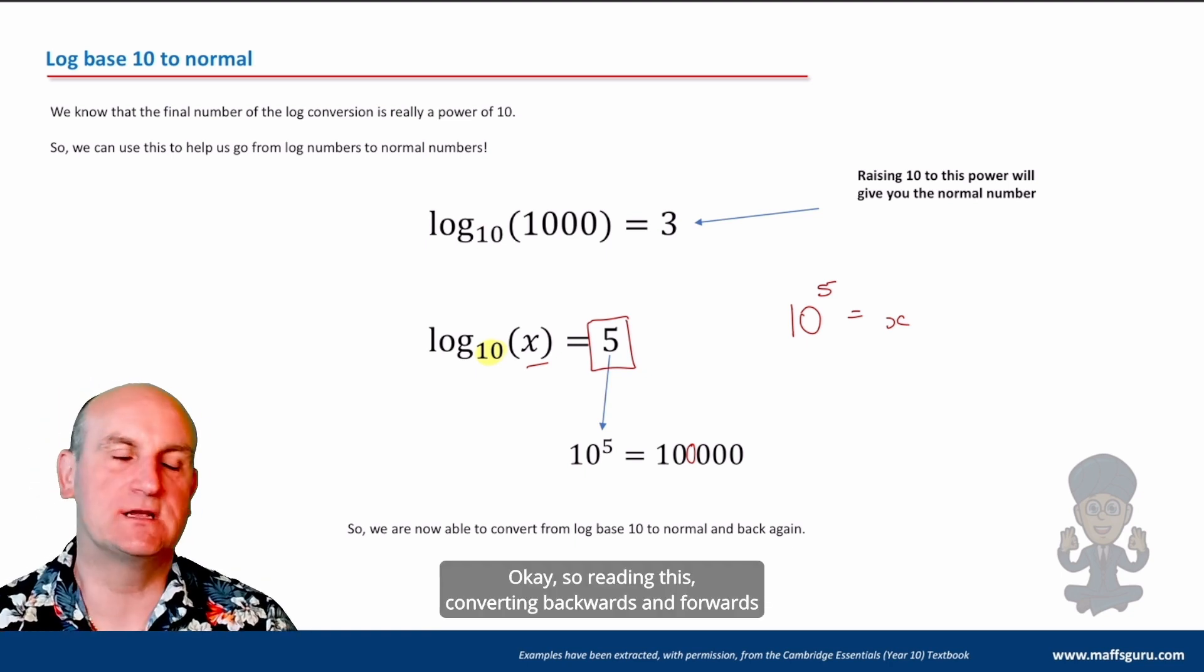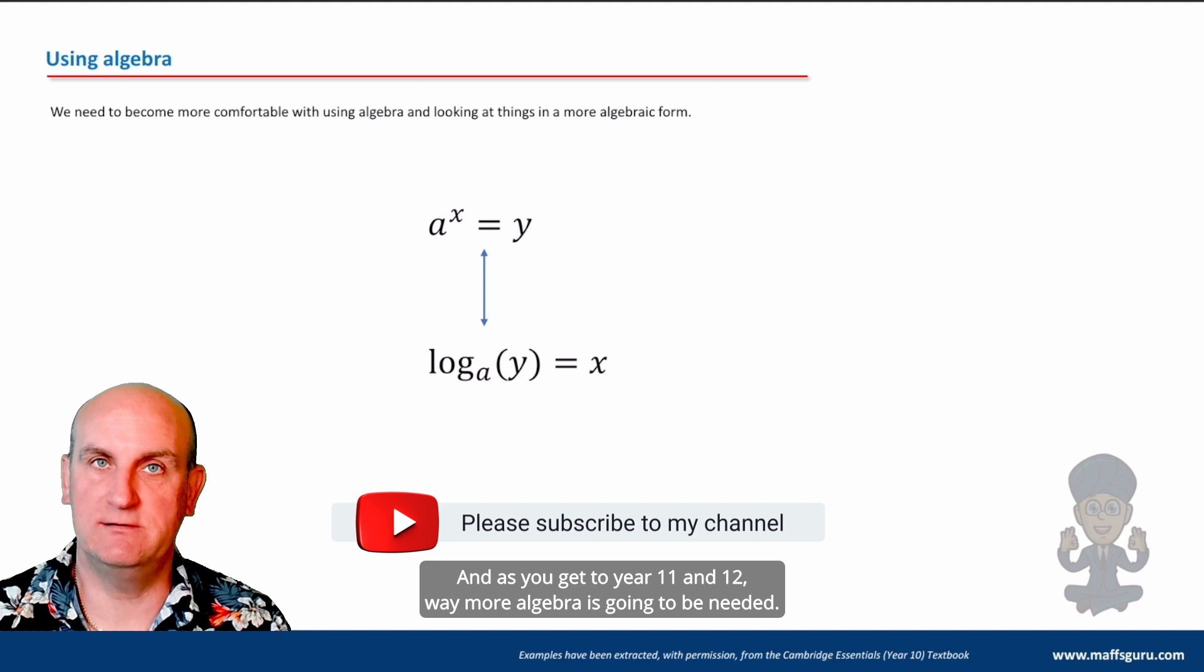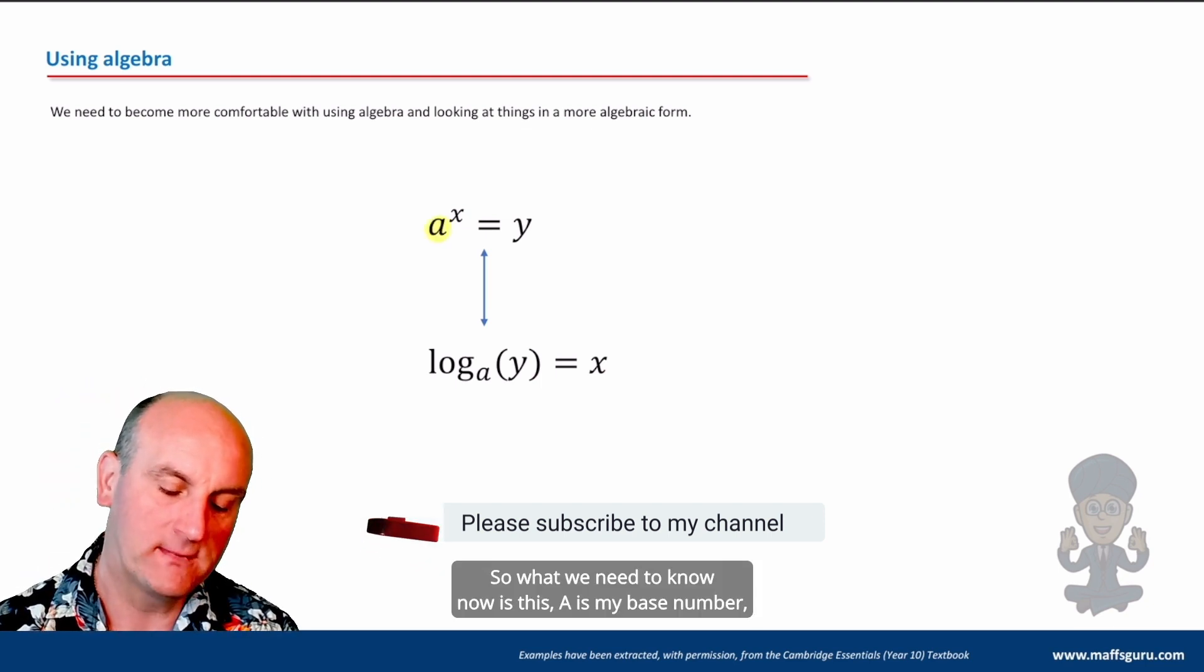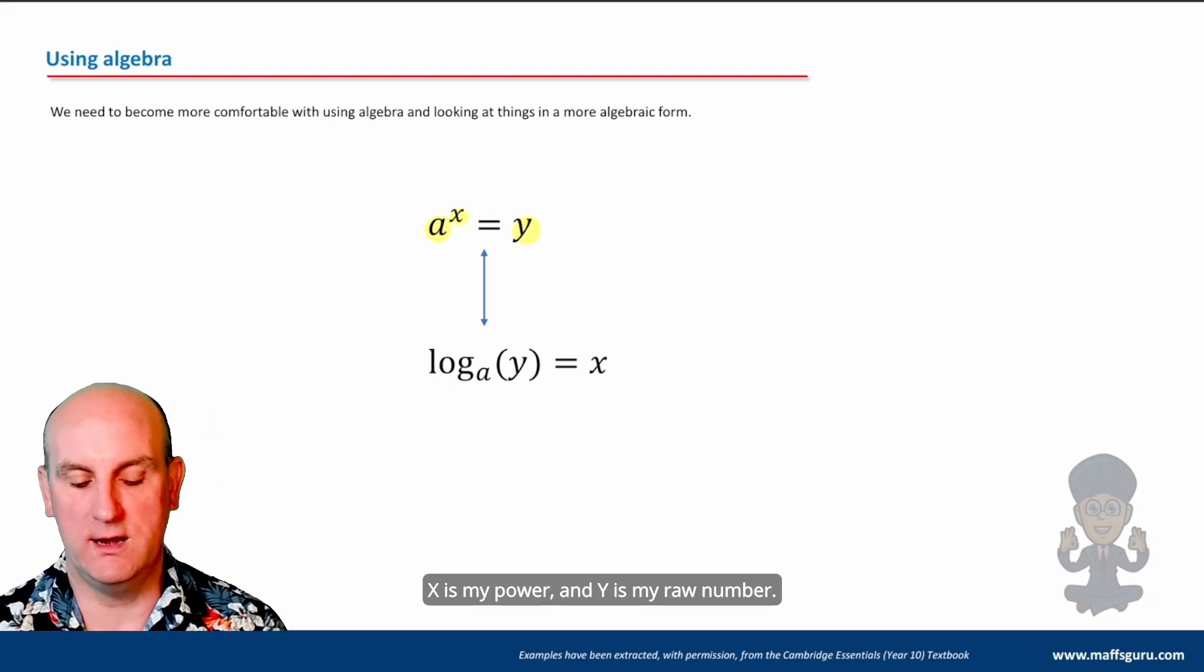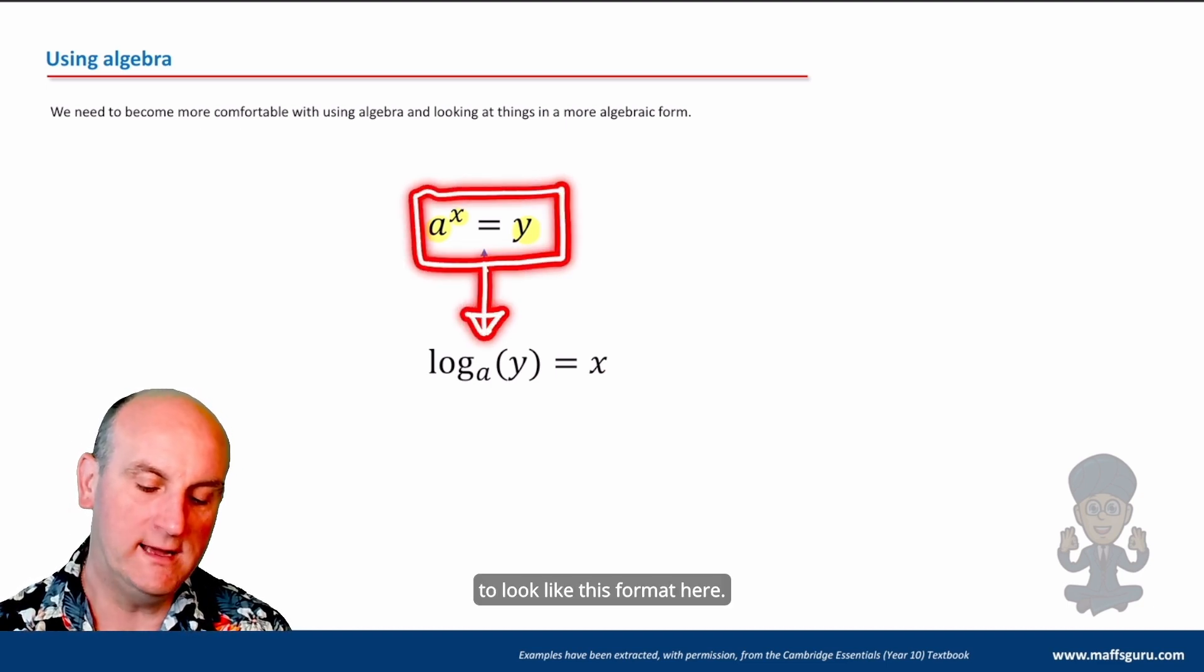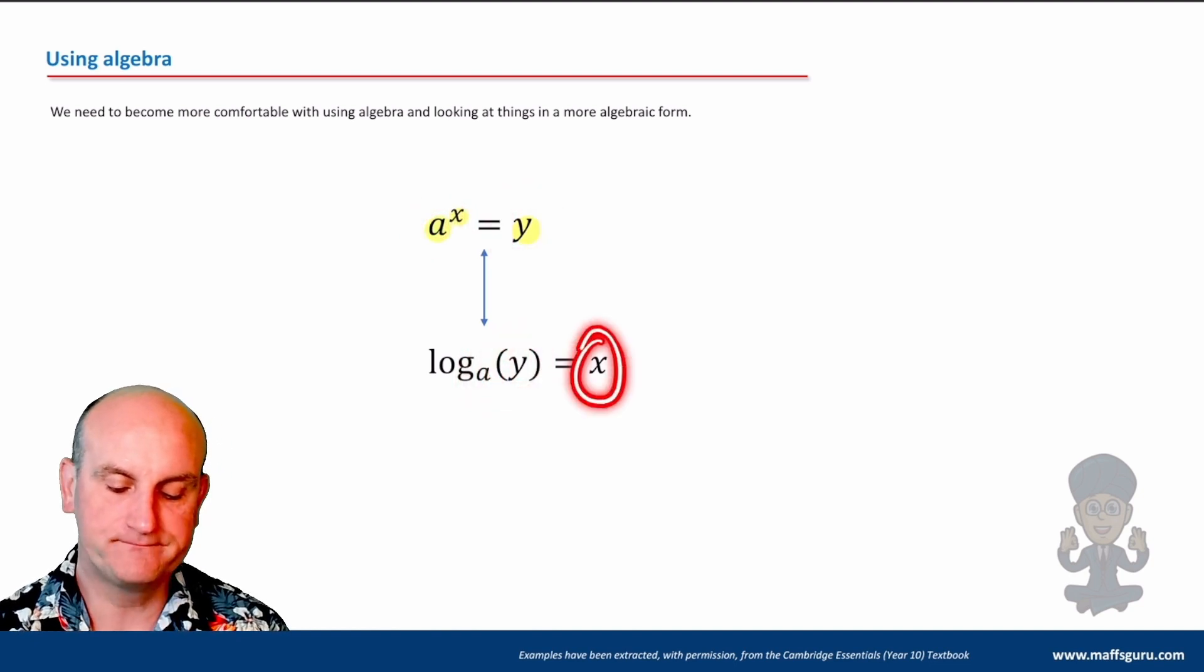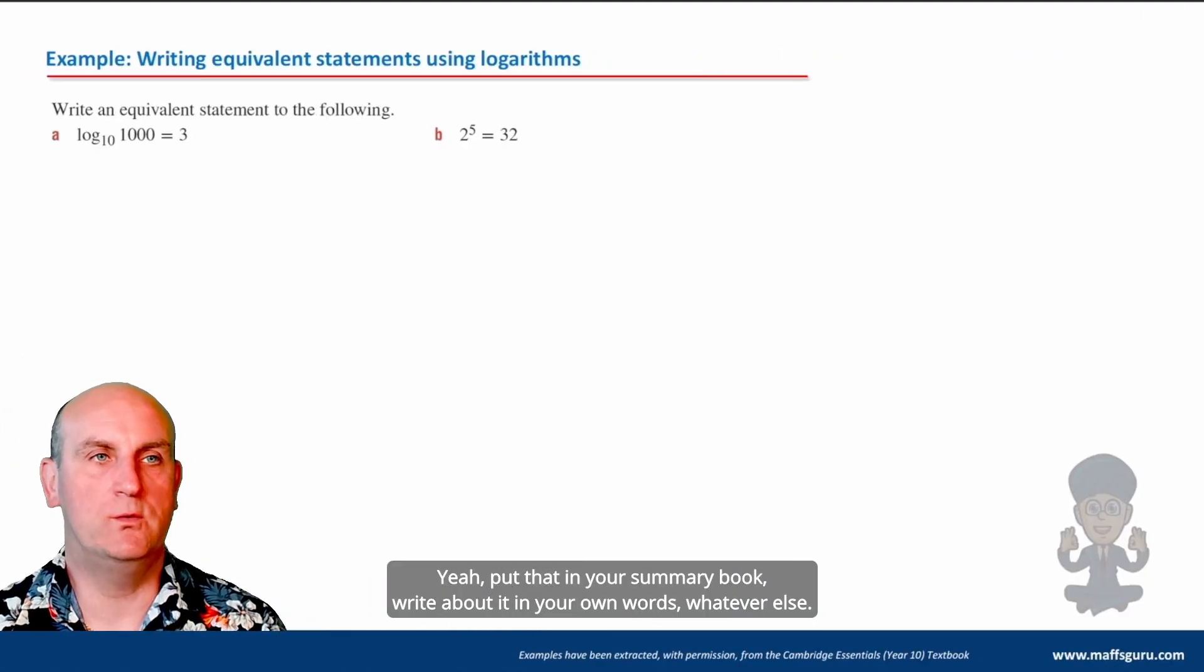So reading this, converting backwards and forwards is a skill that you're going to need. Using algebra. Now this course is algebra based. And as you get to year 11 and 12, way more algebra is going to be needed. So you've got to be comfortable with the general idea of now using letters. So what we need to know now is this A is my base number, X is my power, and Y is my raw number.